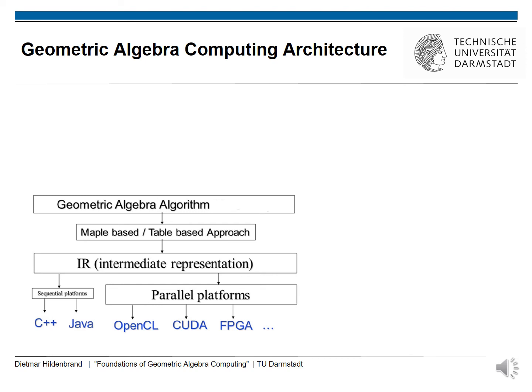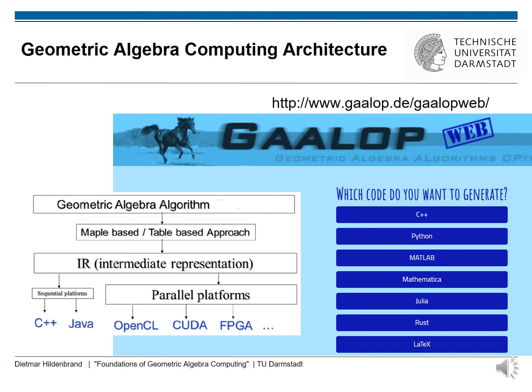This shows the architecture of GAALOP. As input we have our geometric algebra algorithm. After an optimization approach, we have an intermediate layer for the intermediate representation. From this intermediate representation, we can derive solution code for sequential platforms as well as for parallel platforms. Examples for sequential platforms are the generation of C++ and Java code. For parallel platforms, for instance OpenCL, CUDA, or FPGA code. With our web-based GAALOP called GAALOP-Web, we have the possibility to generate C++, Python, MATLAB, Mathematica, Julia, Rust, and LaTeX code.